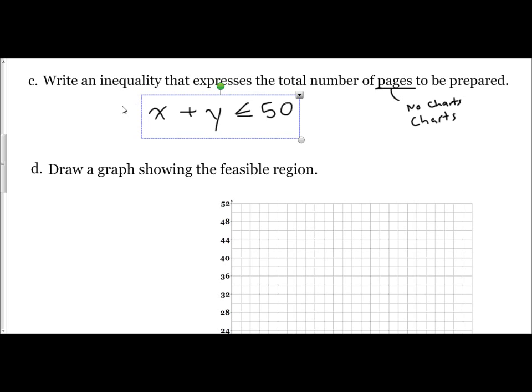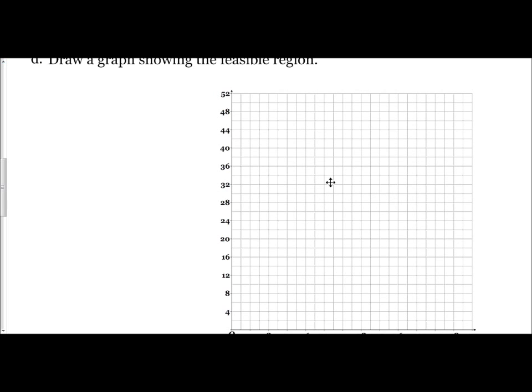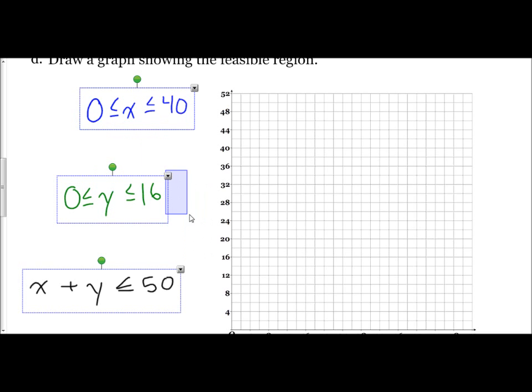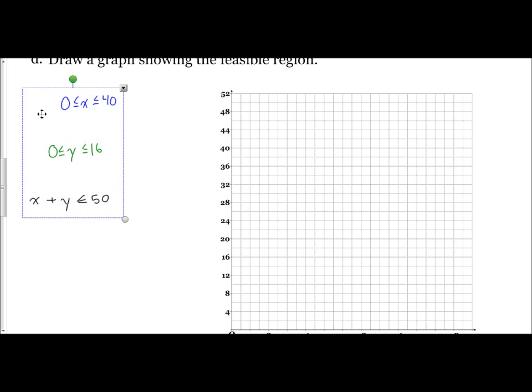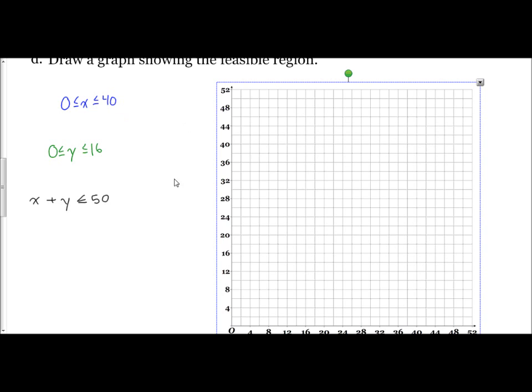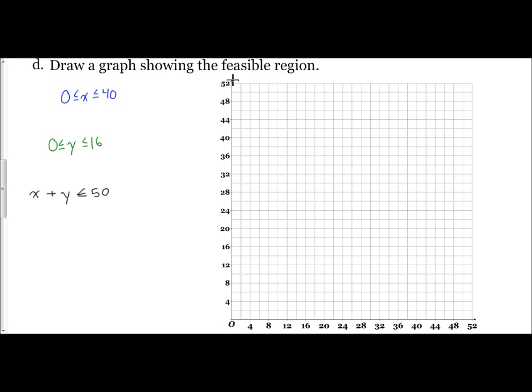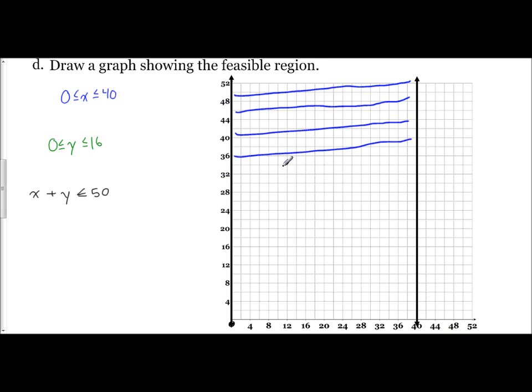And so what we're asked next to do is to draw a graph showing the feasible region. So we have our three inequalities. And we are going to graph these on the grid provided. So let me take my three inequalities. We'll shrink them down so we can get them in our graph. And for our graph, we first will graph our X is between 0 and 40. So remember, X would be vertical lines. These are solid vertical lines. So you have a vertical line through 0, and you have a vertical line through 40. And so our X is located between those. And I said I would use color coding. So I'm going to use blue for these. And so I'm just going to lightly shade in between. I use a pencil. That way we can erase and focus on our feasible region.